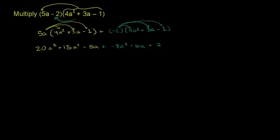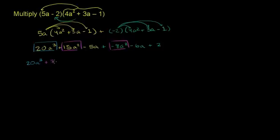Now we can combine like terms. We only have one third-degree term: 20a to the third. Then for the a squared terms, we have 15a squared and negative 8a squared. 15 minus 8 is 7, so that gives us 7a squared. Then we have negative 5a and we add negative 6a — going 6 more negative — giving us negative 11a. And finally we have the constant, positive 2.